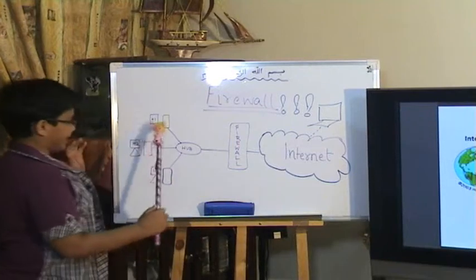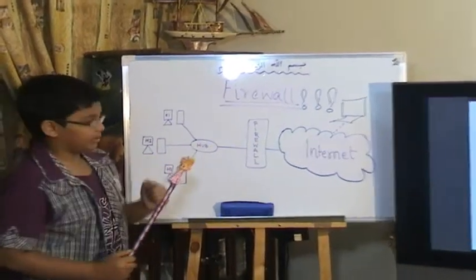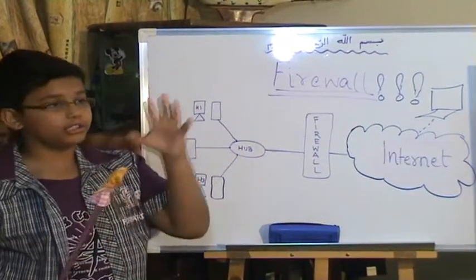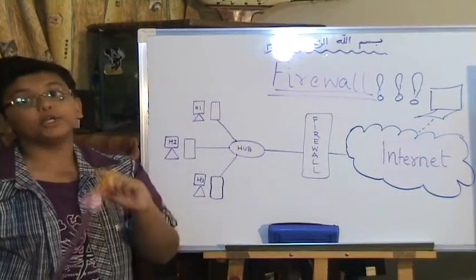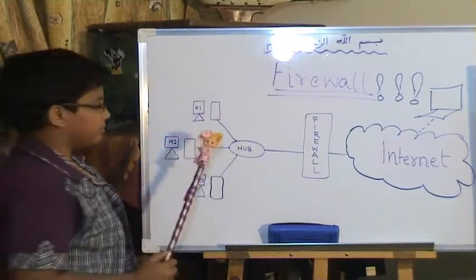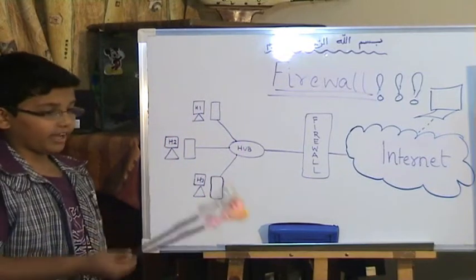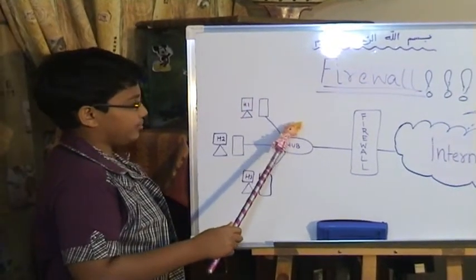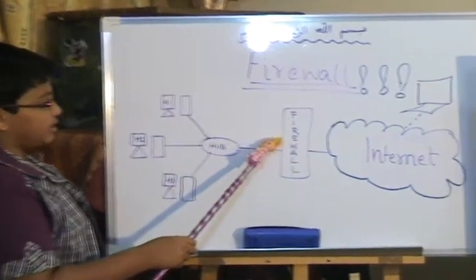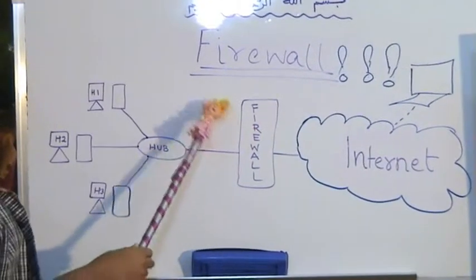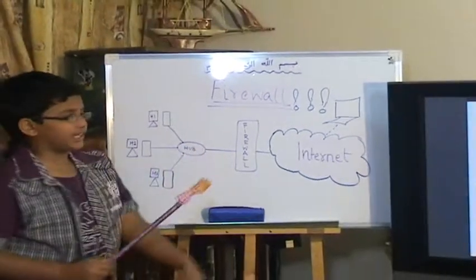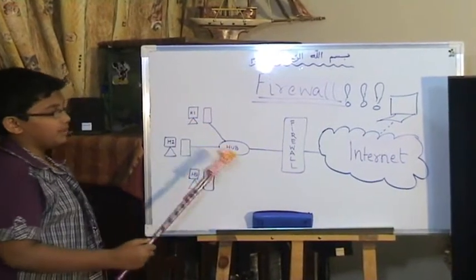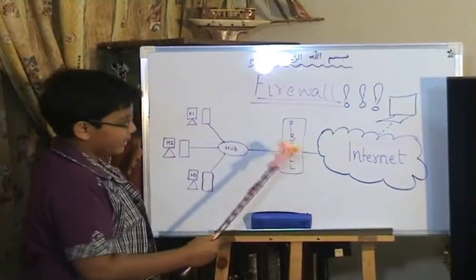But for outgoing data — for example, the boss in the company announced a rule: all employees are not supposed to access YouTube.com. He'll configure the firewall to block YouTube.com. So when a host tries to access YouTube.com, the request travels through the hub and reaches the firewall, but Mr. Firewall comes into action again. He checks: is it blocked or unblocked? It's blocked, so he drops the packet. This is how a firewall works on both outgoing and incoming data.